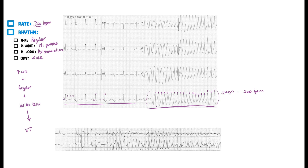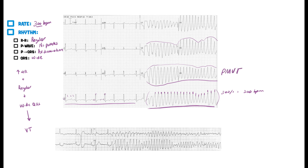Remember the last EKG we said was monomorphic — they all looked the same. But this is different. Some of these QRS complexes are a little shorter than others. In V2 or V5, some are peaked and then some dip down and come back up. Going further, some go up and then dip down. These QRS complexes are not all exactly the same — they're polymorphic. So this is a type of polymorphic V-tach.